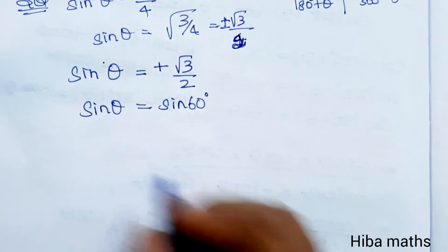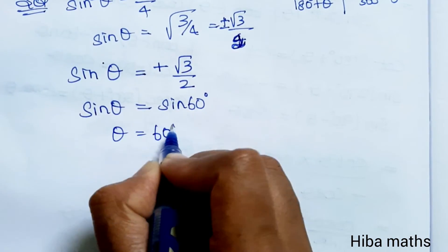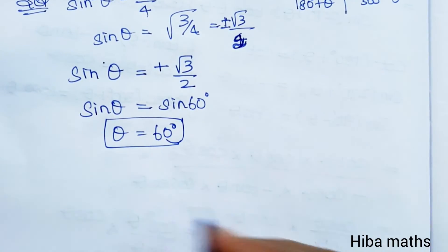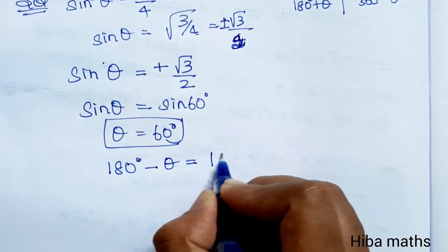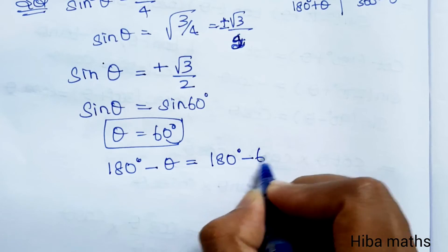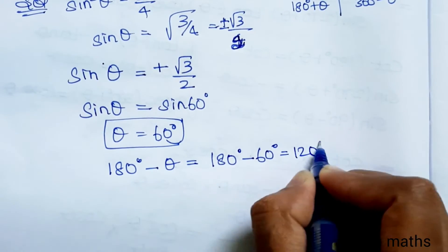We will substitute 180 degree minus theta: 180 degree minus 60 degree which is 120 degree.